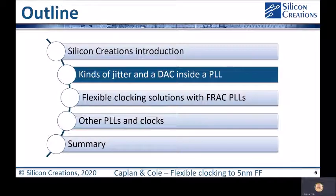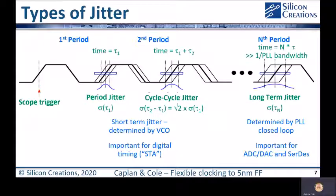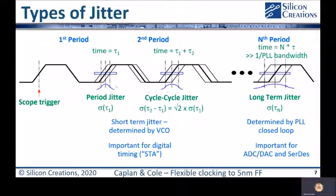So now let's talk about jitter. The diagram on the screen is what you might see if you captured a clock on an oscilloscope. If we look at the scope trigger on a rising edge and then zoom in on the first rising edge after that, and use the histogram function of the oscilloscope to capture a histogram of where the rising edges fall, the histogram would represent the period jitter of the clock or of the PLL. The one sigma value of this Gaussian is the RMS period jitter.